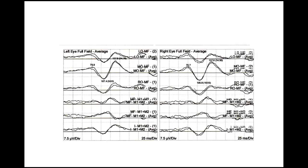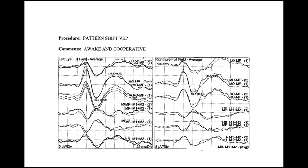In the next example, the latency is 100.7 ms on the left and 101.1 ms on the right. The absolute latencies are normal and the interocular latencies are normal, so this is a normal study. Amplitudes can be measured from one peak to one trough — comparing the two sides; if the difference is more than 50%, the side with the lower amplitude is abnormal.